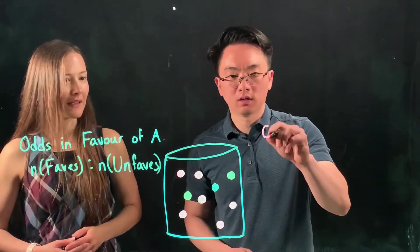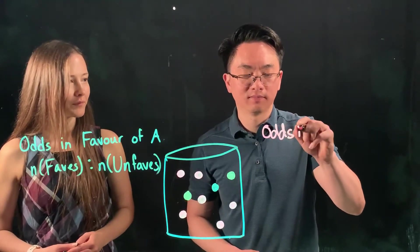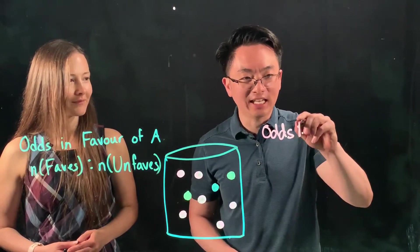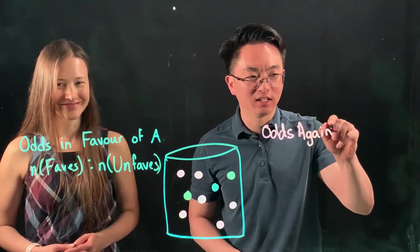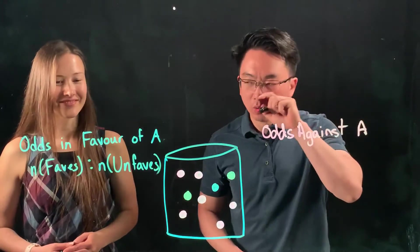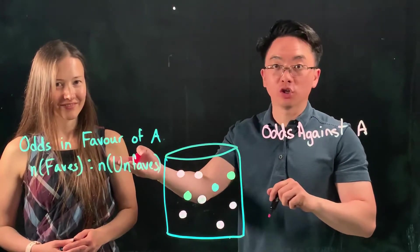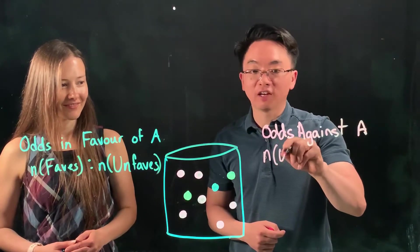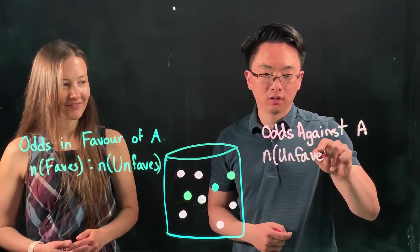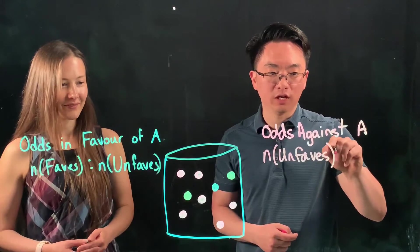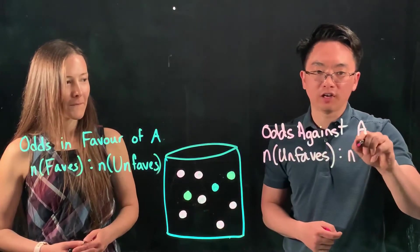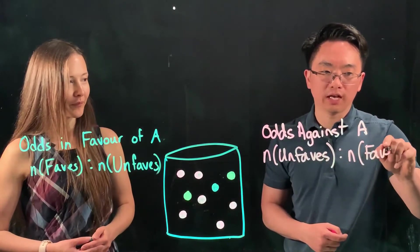So what would be odds against? Well, the odds against, I'll say against A, would be the reverse of that ratio, right? So it would be the number of outcomes that are unfavorable or the unfaves to event A compared to the number of outcomes that are favorable to A, or we'll call that the faves.